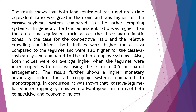Also, both indices were on average higher when the legumes were intercropped with cassava using the two meters by half a meter spatial arrangement. The results further show a higher monetary advantage index for all cropping systems compared to monocropping.